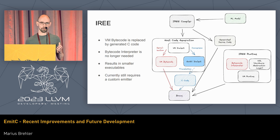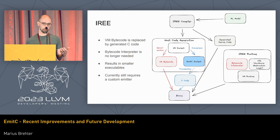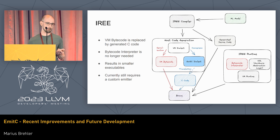In Erie — for those not aware — Erie is an end-to-end compiler for machine learning, consisting of the Erie compiler and the Erie runtime. The Erie compiler has a host code generation side and a device code generation side; we're focusing on the host code here. In the host code, there is a virtual machine and a VM dialect that is normally serialized to VM bytecode and interpreted at runtime. But what you can do with EmitC is convert it to EmitC, create C code, and essentially skip the bytecode interpreter, so your executable will be smaller. Currently that still requires a custom emitter in Erie, and we mainly use it for bare-metal targets where the size of executables matters.